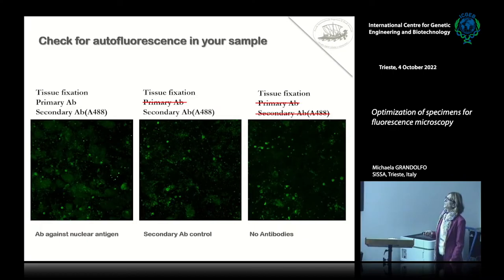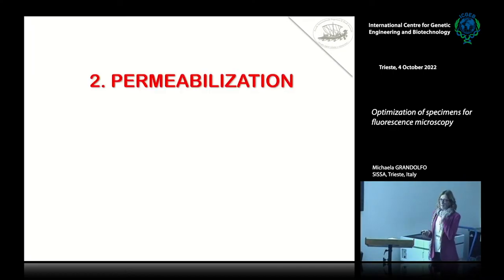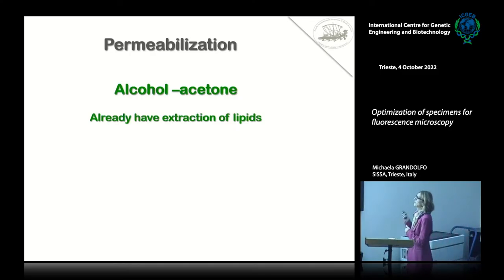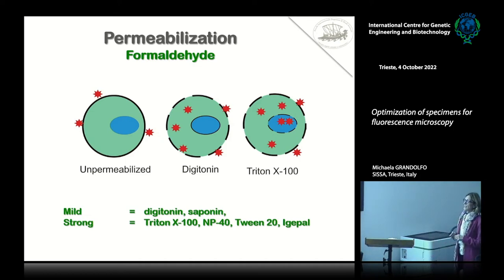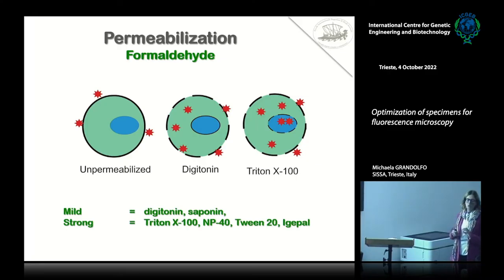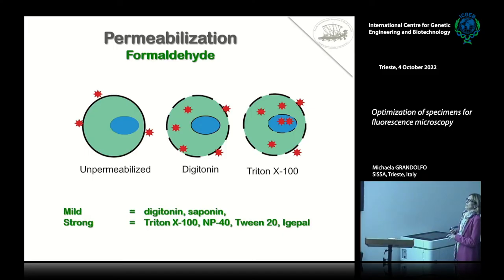Let's move to permeabilization, the second step. As I said, if you use alcohol or acetone your cells or tissue are already permeabilized. If you use aldehydes, you need to permeabilize yourself. This is not completely true because during fixation, a sort of permeabilization due to cross-linking does develop — but in principle you do not have a permeabilization that allows your antibody to reach the antigen.